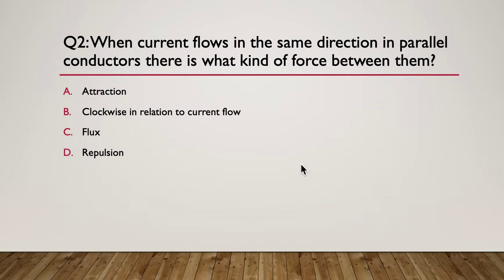When current flows in the same direction in parallel conductors, where is it and what kind of force is between them? So there's a kind of force between them. When they're in parallel, what kind of force we're going to get between them? So the answer is A, we're going to get a traction force. B, we're going to get a clockwise force in relation to the current. Or C, are we going to get flux? Or are we going to get a repulsion force? So there are your four possibilities. Pause here.